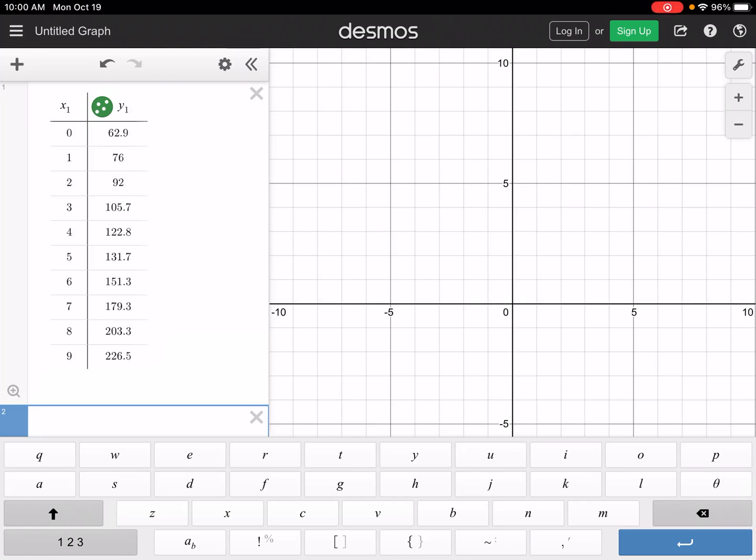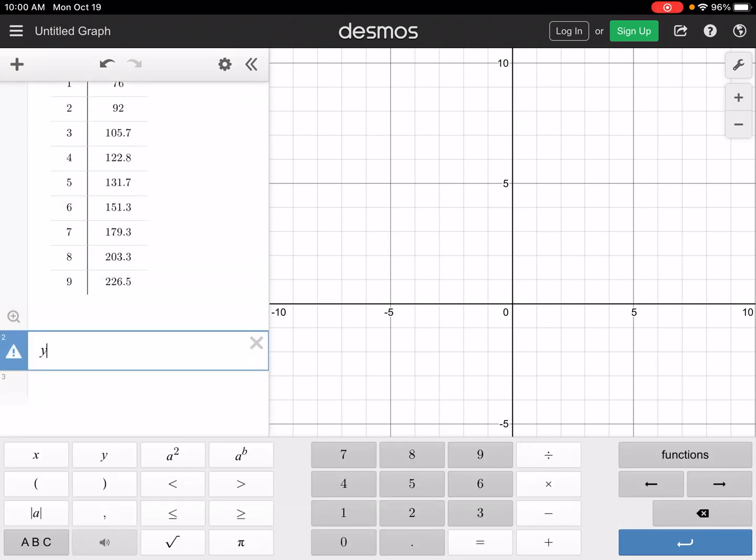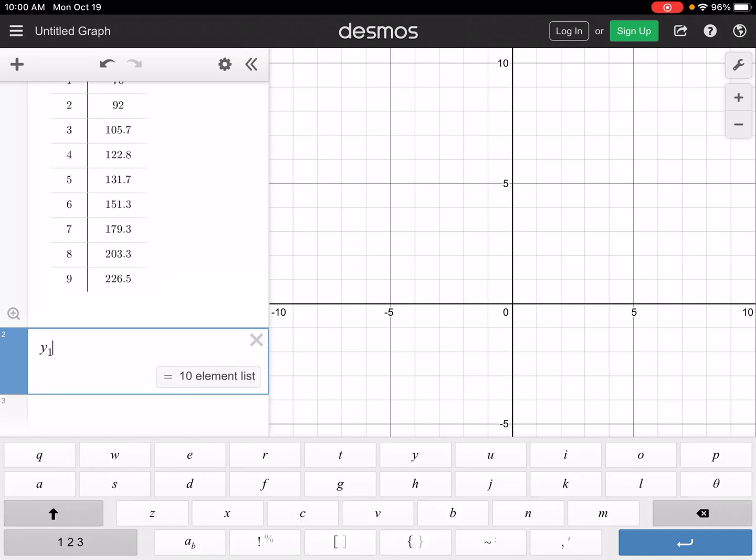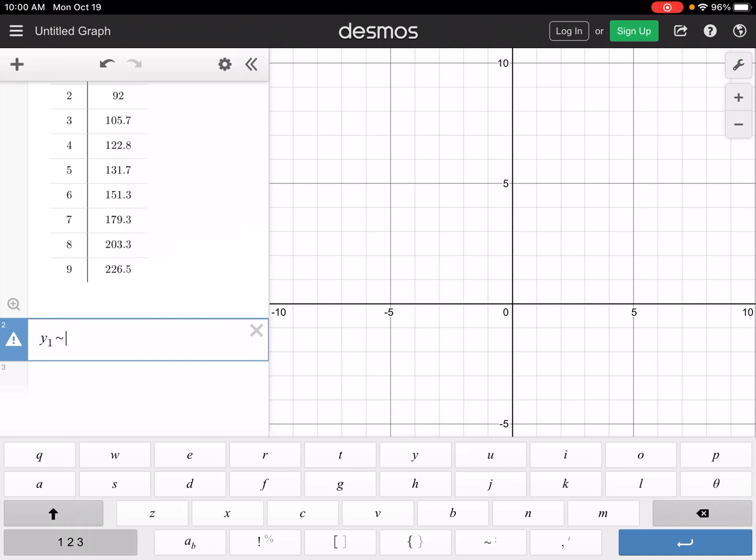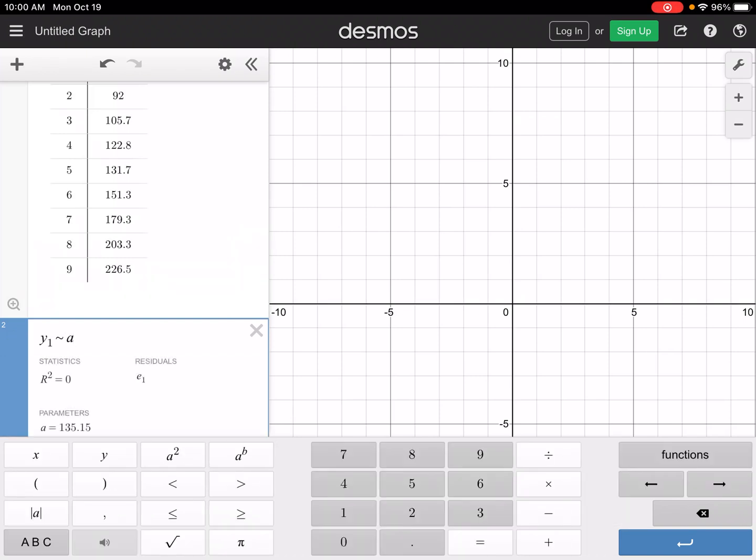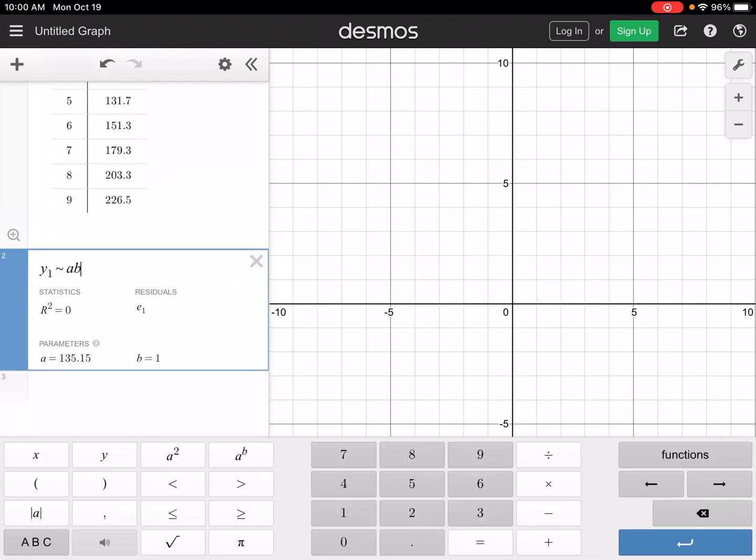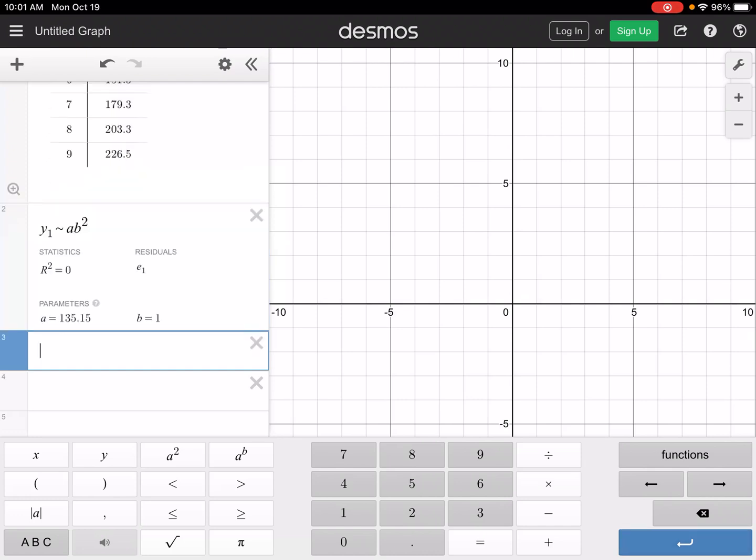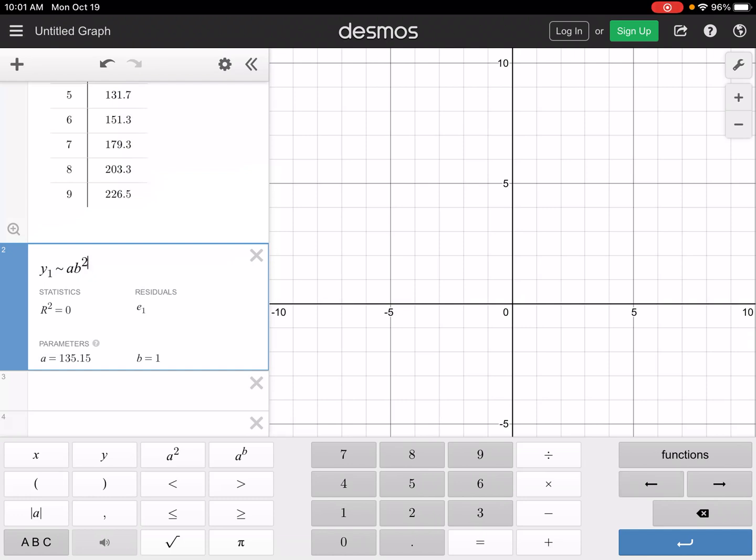To get an exponential regression, we're going to type in y1, and then you're going to use the approximately equal to sign, and then we're going to use a times b raised to x1 as the exponent. You can see the second I did that, I have parameters, so it tells me that a is equal to 68.72, and that b is 1.14.